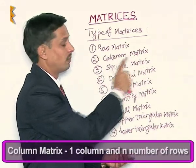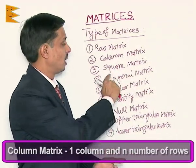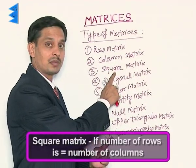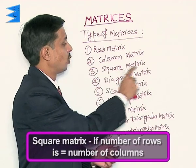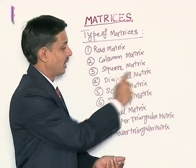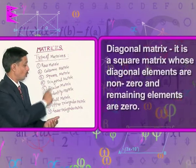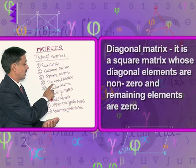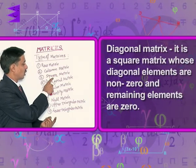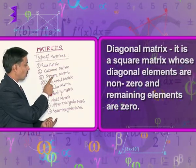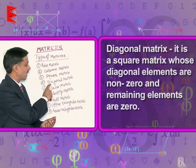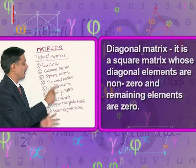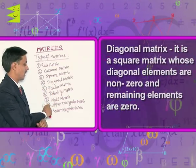If a matrix has a single column, it is a column matrix. If a matrix is such that the number of rows and columns are the same, then it is known as the square matrix. Diagonal matrix: a mandatory condition for the diagonal matrix is that it is always square. All those square matrices whose diagonal elements are non-zero and the remaining elements are 0 are known as a diagonal matrix.